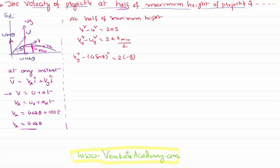The acceleration is -g because the body is moving upward while gravity acts downward. We also know that H_maximum = u²·sin²θ / 2g. If you don't know this derivation, please refer to the previous videos in the playlist where I have already proved it.